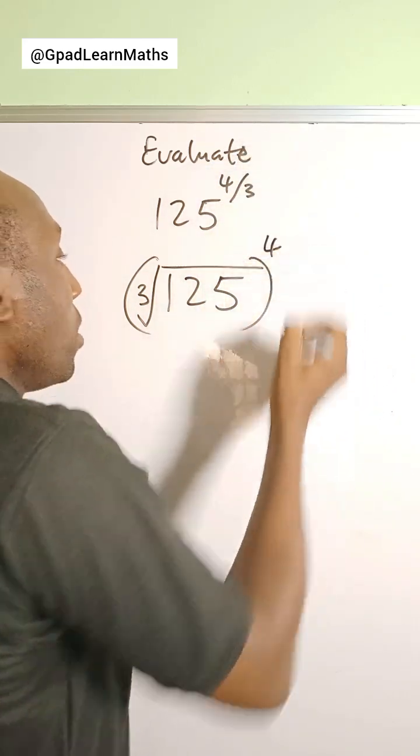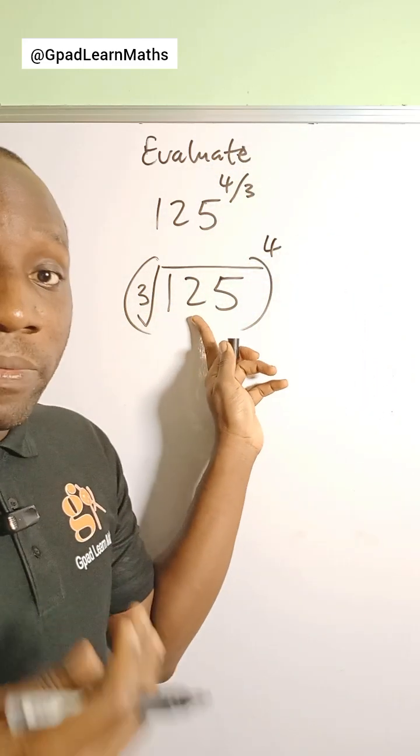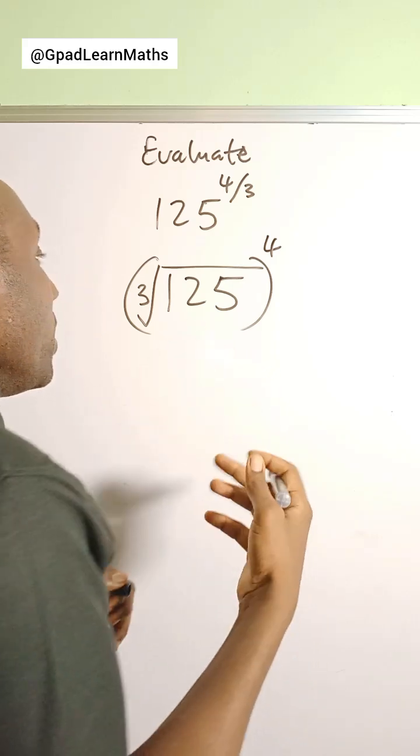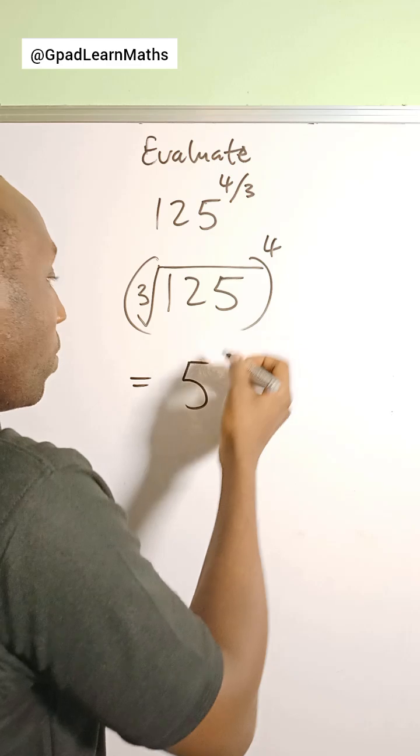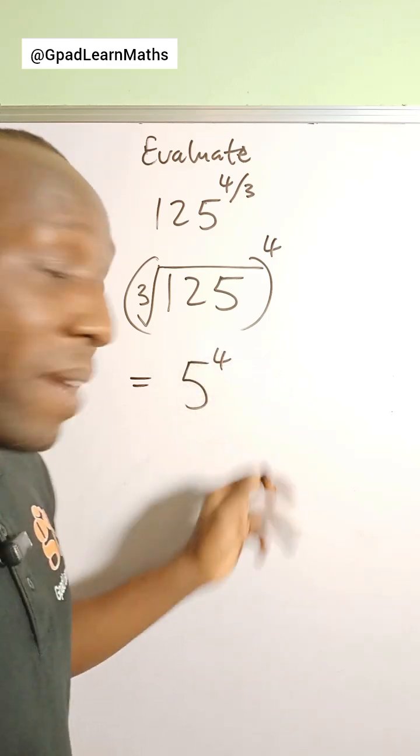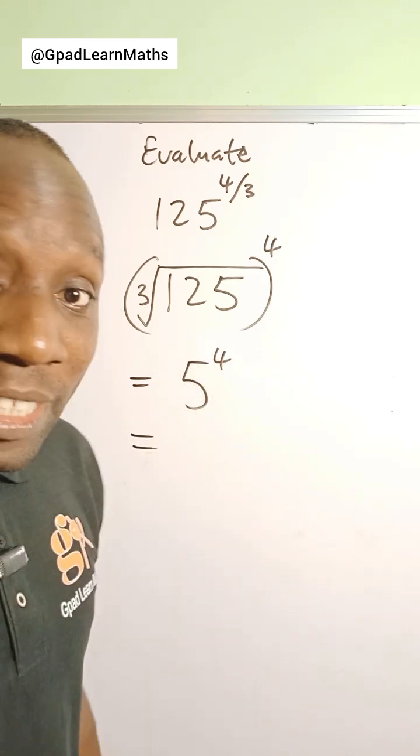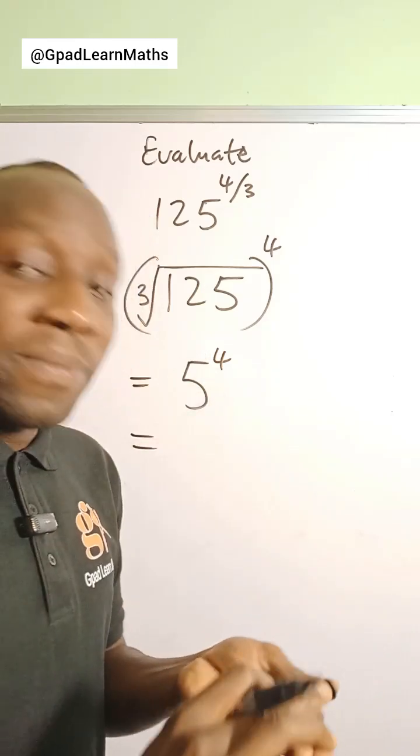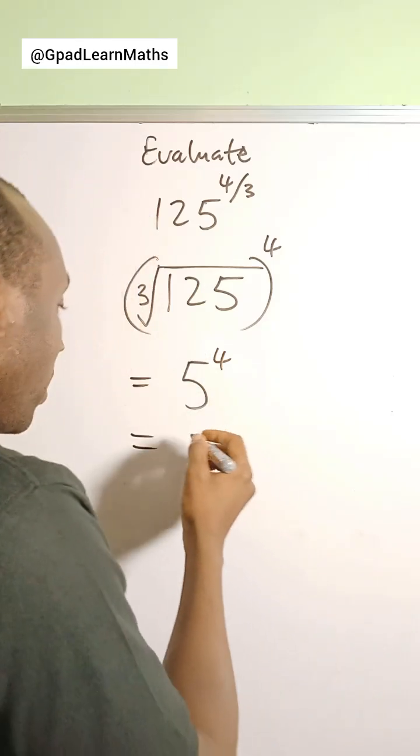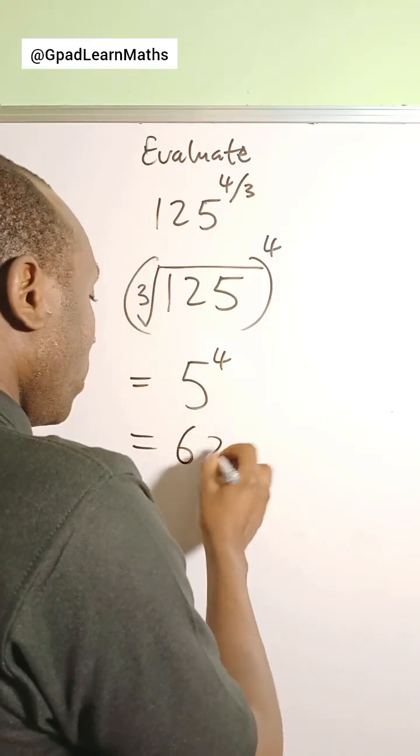So what is the cube root of 125? It is five, because five times five times five is 125. So that's five raised to the power of four. What is five raised to power four? It is not 20, it is five times five times five, which is 125, times five is 625. That's 625.